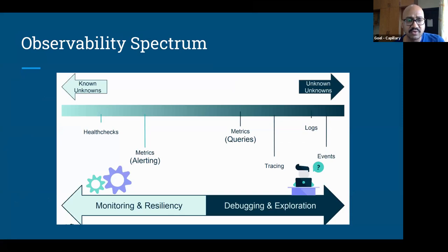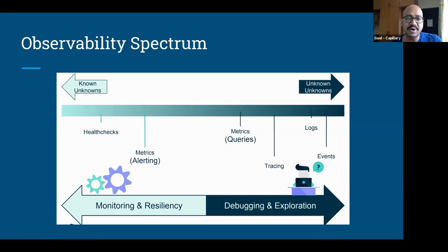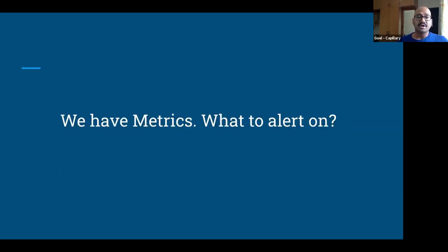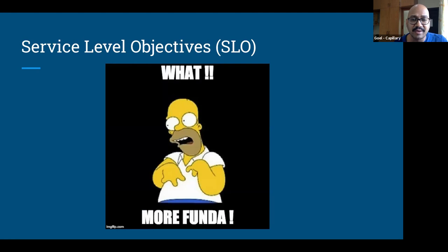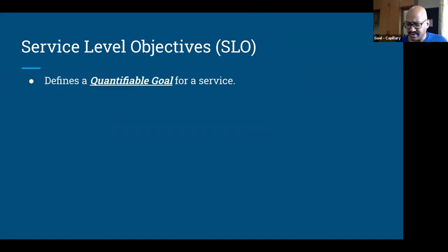Looking at the observability spectrum: health checks and some form of metrics help you for monitoring and resiliency. We've discussed metrics, logs, and tracing. Coming back to the problem we started with — what do you want to alert on? This brings in Service Level Objectives, a term popularized heavily by Google's SRE teams. SLOs are nothing but a very simple, quantifiable, and measurable goal for a service, and that goal should be linked to the user experience or the delight factor.